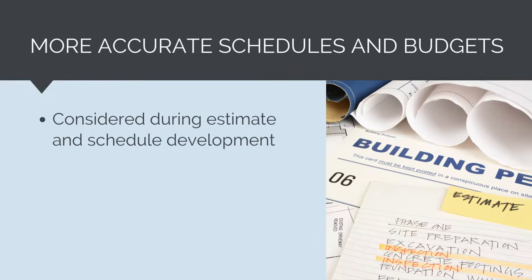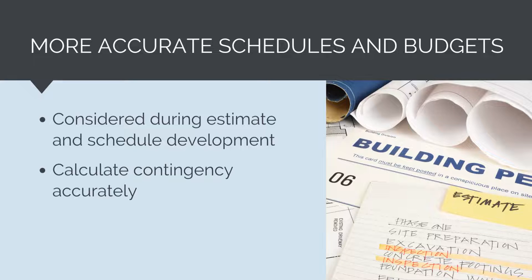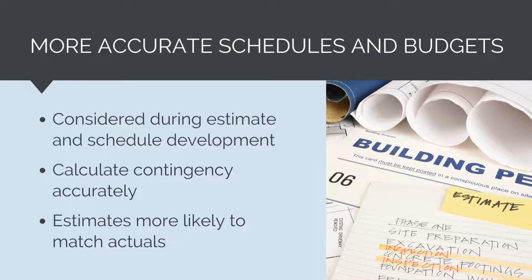By considering uncertainty during the schedule and cost estimate development, our contingency reserves will be more accurate. Rather than allowing 5% or 10% as contingency, we can put some real science and calculations behind these numbers. We will have a quantitative estimate rather than simply assigning a contingency percentage. If we believe there is a 30% chance of encountering a $100,000 design defect, then we can allocate $30,000 as forecast contingency. With actual science and quantification behind these numbers, we will have more accurate schedules and budgets.